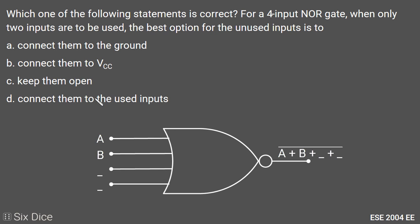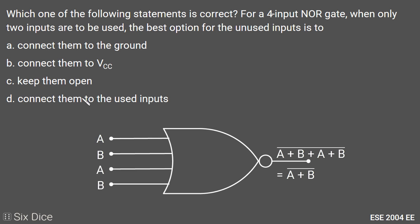Option C: Keep the unused inputs open. There are two logic families — TTL (transistor-transistor logic) and ECL (emitter-coupled logic). In TTL, a floating or open input is treated as logic 1, whereas in ECL it is treated as logic 0. Since the question does not specify which logic family is used, Option C is not a feasible option.